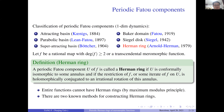Suppose F is a rational map with degree at least two, or a transcendental meromorphic function. A periodic Fatou component U of F is called a Herman ring if U is conformally isomorphic to some annulus, and if the restriction of F, or some iterate of F on U, is holomorphically conjugate to an irrational rotation of this annulus.